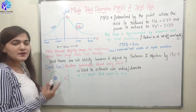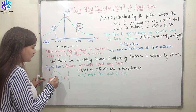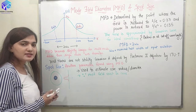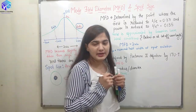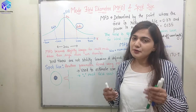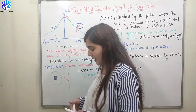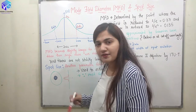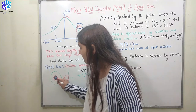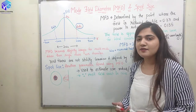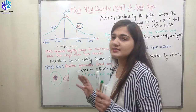Now coming to spot size: spot size is another parameter found using MFD, and it tells me at which location the maxima of the field occur. It is used to estimate the core radius or diameter, because most of the field is present inside the core — only the evanescent field is present in the cladding. Looking at the field pattern, the maxima of the field are present within the core region, so from that I can determine the core diameter or core radius, since most of the field exists inside the core.